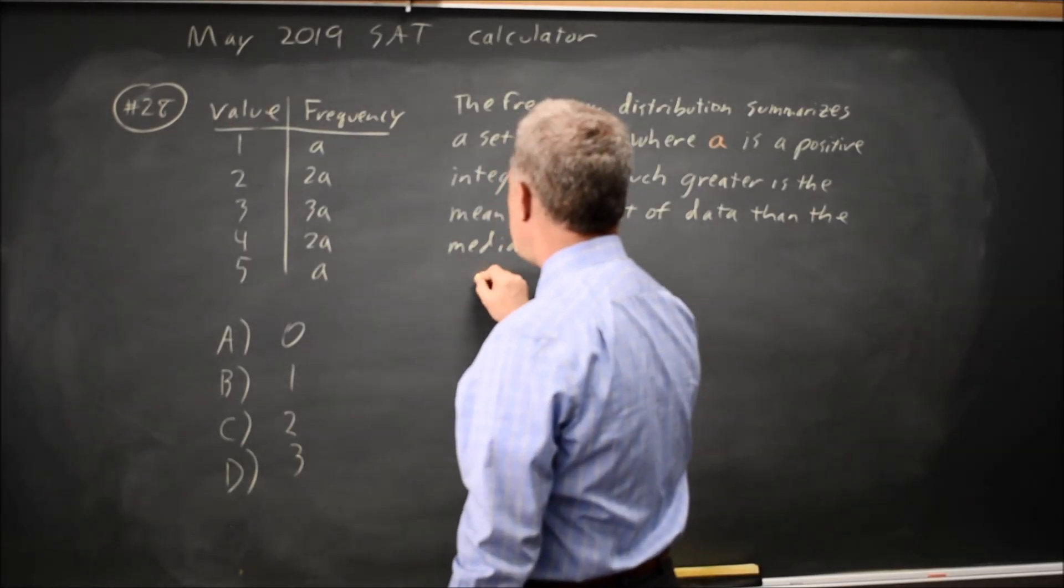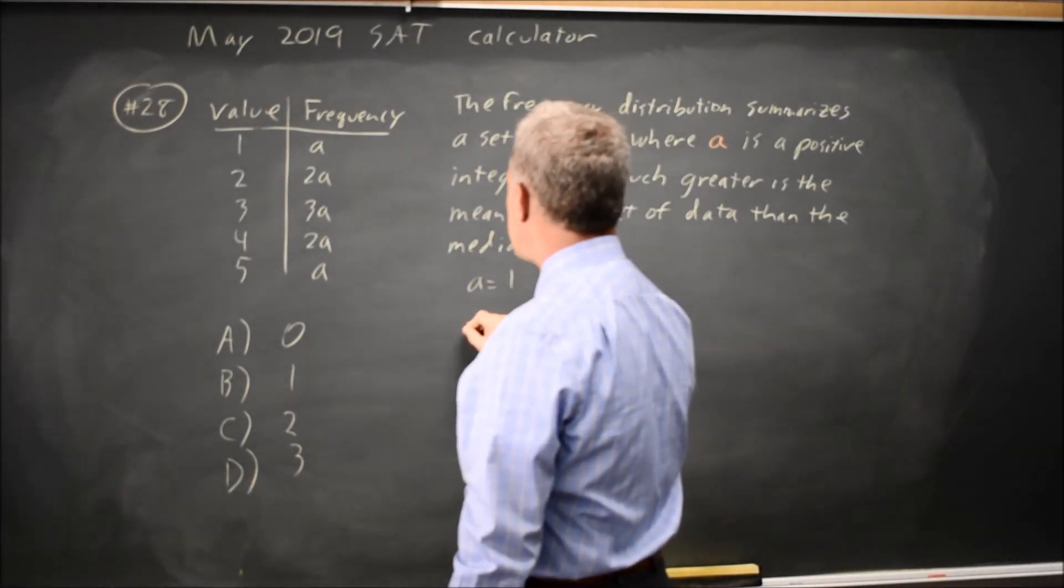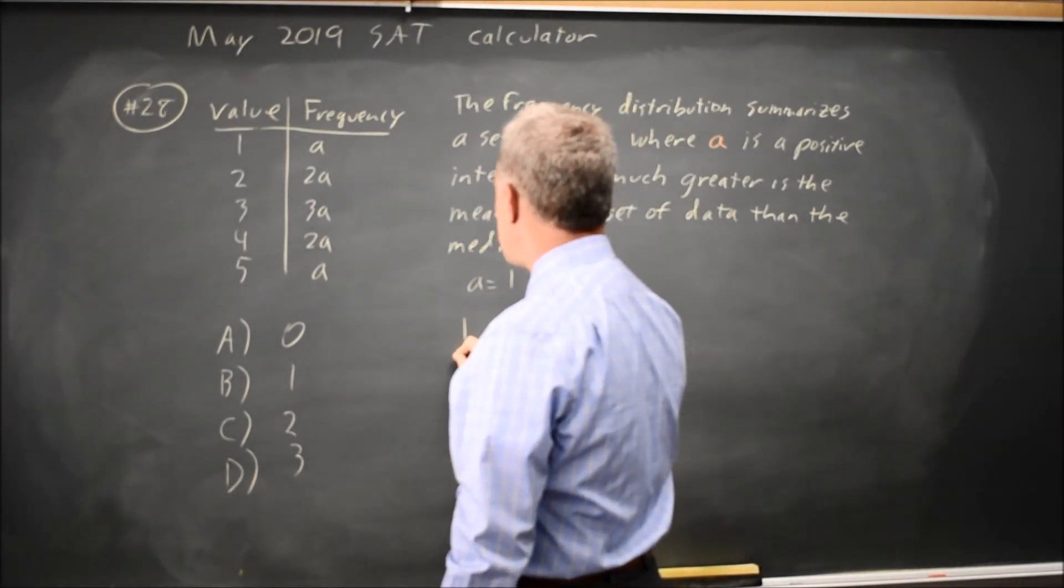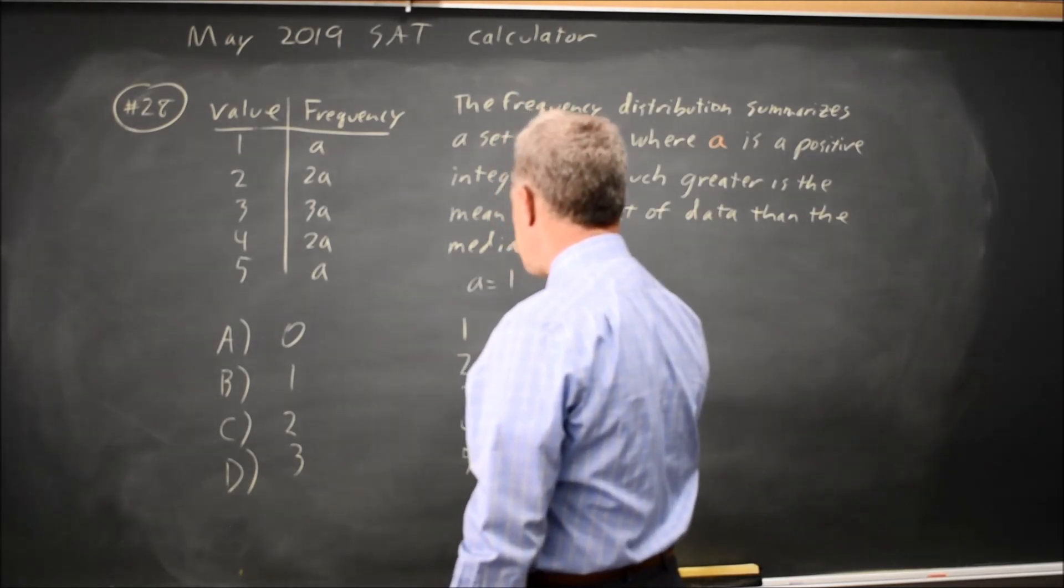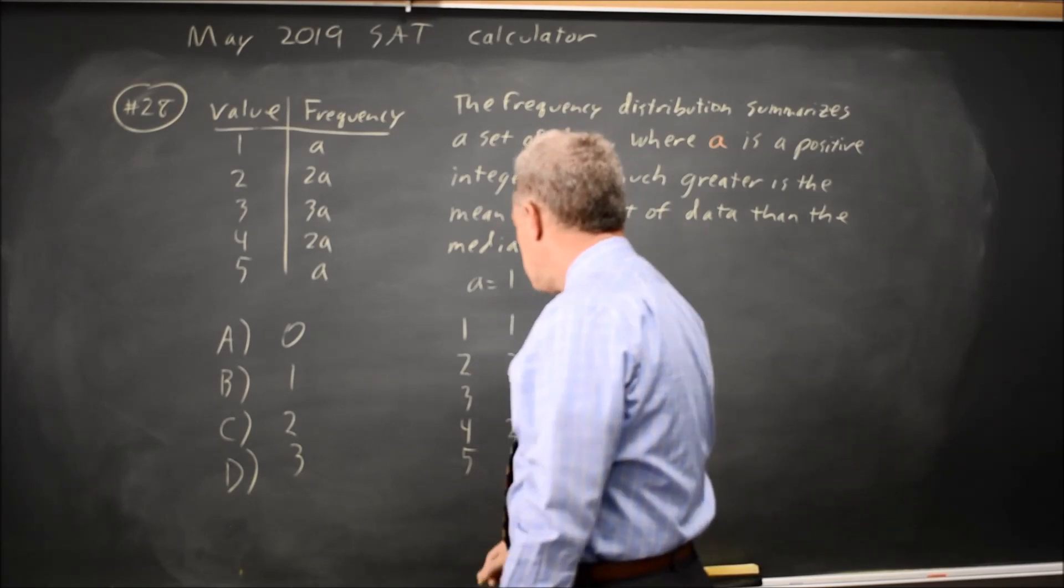So I'm going to choose a value for A. I'm going to choose A equals 1. So my values 1, 2, 3, 4, 5 have frequencies 1, 2, 3, 2, 1.